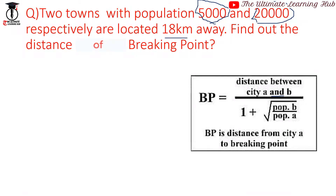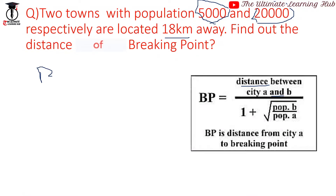The question is: two towns with populations of 5,000 and 20,000 respectively are located 80 kilometers away. Find the distance to the breaking point. We get the distance between city A and B, which is 18 kilometers.